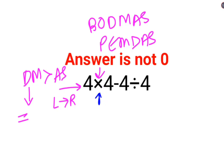So 4 multiplied by 4 is 16. Now we have 16 minus 4 divided by 4. You should not do the subtraction first because division needs to be done before. So 4 divided by 4 is 1, then 16 minus 1 equals 15. The answer for this question is supposed to be 15.